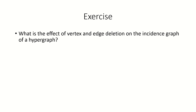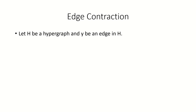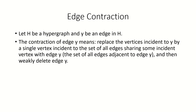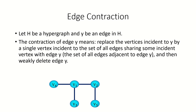As a challenge, think about the effect of edge and vertex deletion on the incidence graph of a hypergraph, and share your findings in the comments. As the last concept in this video, let's look at edge contraction. If we have a hypergraph H and some edge y, then a contraction of edge y is when we replace the vertices that were incident to y by a single vertex, which we make incident to the set of all edges that shared a vertex with y, and finally weakly delete y. In graph theory, edge contraction works the same way — we delete the edge and merge the endpoints into a single vertex incident to any edge adjacent to our contracted edge.